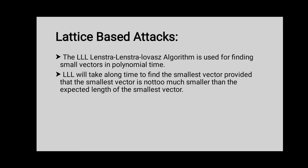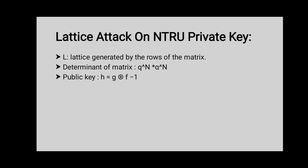In lattice-based attacks, which is also a type of security analysis, the attacker finds one or more small vectors in a given lattice and uses lattice reduction to get the smallest vector. The LLL algorithm — Lenstra-Lenstra-Lovász — finds the smallest vector in polynomial time. This algorithm will take a long time to find the smallest vector, provided that the smallest vector is not too much smaller than the expected length of the smallest vector. This algorithm performs a lattice attack on the NTRU private key.